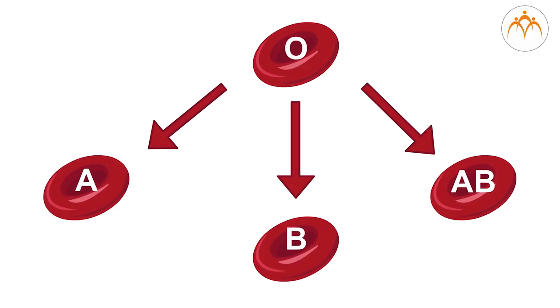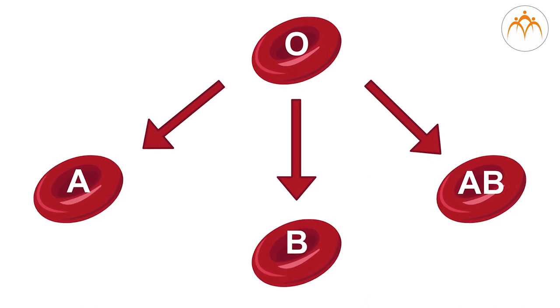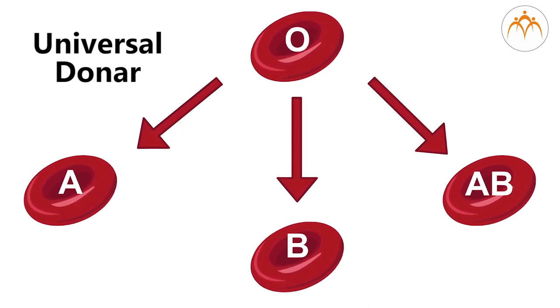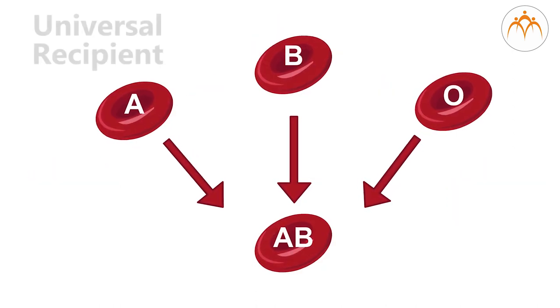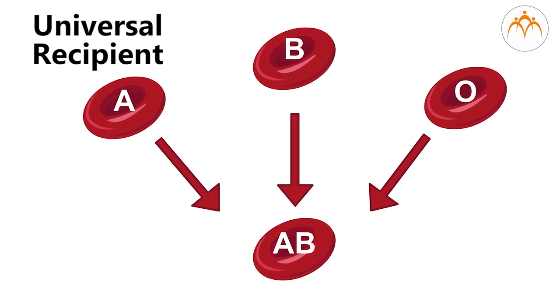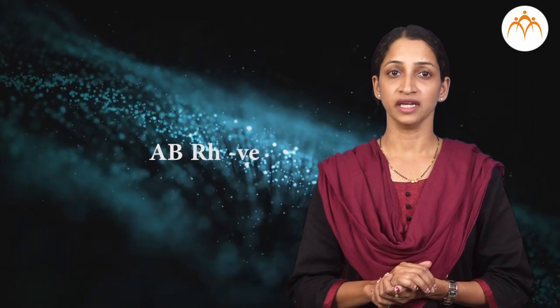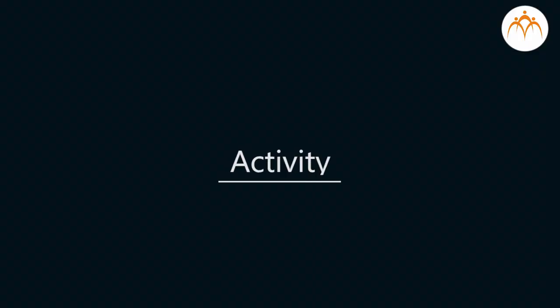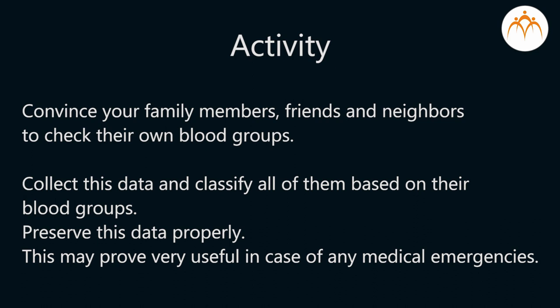Among four blood groups, blood group O can donate to the person having any other blood group — meaning it is the universal donor. On the other hand, AB blood group is called universal recipient; this blood group can receive blood from any other blood group. It is always a challenge to find a donor for people with RH negative blood group. Among them, AB RH negative is the rarest blood group. Therefore, I suggest a small activity: convince your family members, friends and neighbours to check their own blood groups, collect this data, classify all of them based on their blood groups, and preserve this data properly. This may prove very useful in case of any medical emergencies.